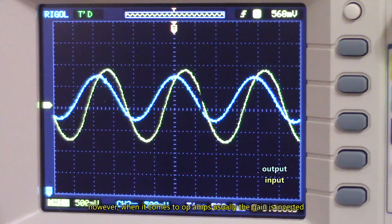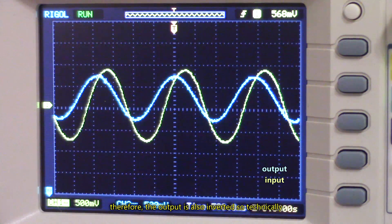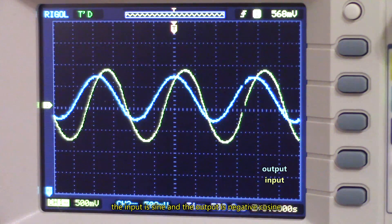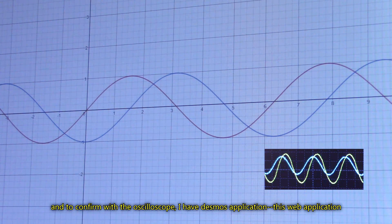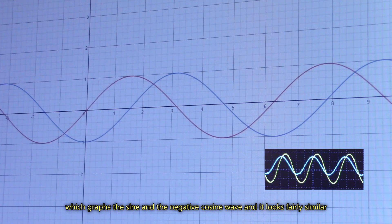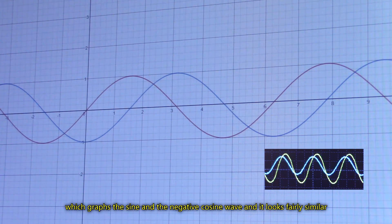However, when it comes to op-amps, usually the gain is inverted. Therefore the output is also inverted. So technically, the input is sine and the output is negative cosine. And to confirm with the oscilloscope, I have this Desmos application, this web application, which graphs out the sine wave and the negative cosine wave. And it looks fairly similar.